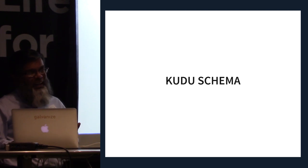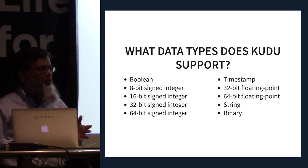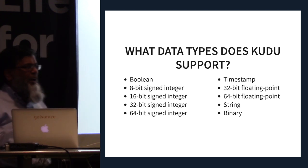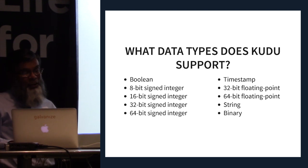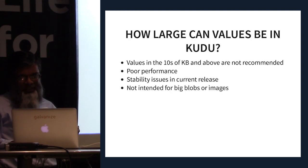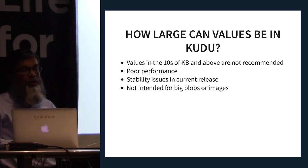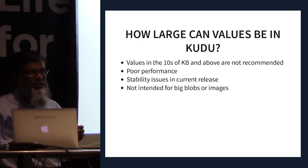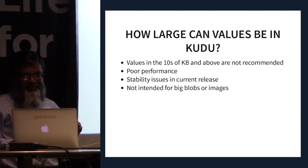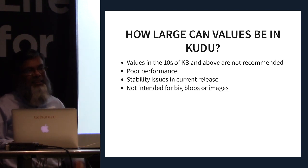Kudu has a static schema. Unlike HBase, which is a NoSQL system where you can add columns on the fly, Kudu requires you to specify columns much like a relational database. It supports primitive types, and cells should be kept small — the recommendation is to stay below 10 kilobytes. It's not really intended for blobs or images, but for records where most column values fit in these cell types.